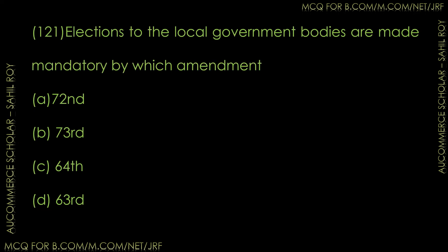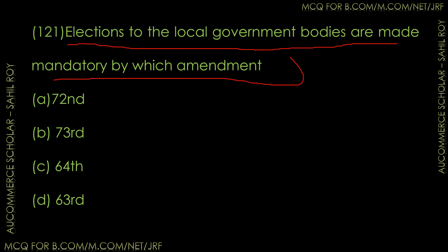Question number 121: Elections to the local government bodies are made mandatory by which amendment? Options: 72nd, 73rd, 64th, or 63rd Amendment. The correct answer is Option B — elections to the local government bodies are made mandatory by the 73rd Amendment.